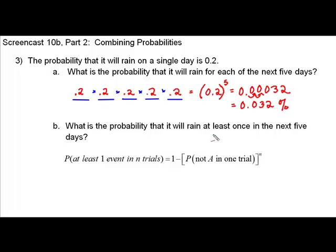Be very careful about the term "at least." At least means that it could rain once in the next five days, twice, three times, four times, or five times. We could combine all of those probabilities individually, but the author in your text has provided a formula — which he gave a good explanation for — for finding probability when you're dealing with at least scenarios.